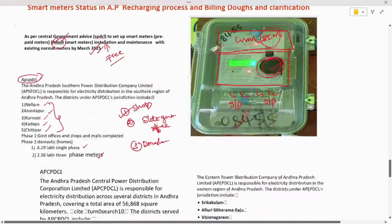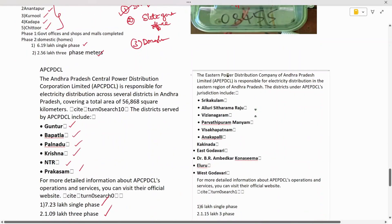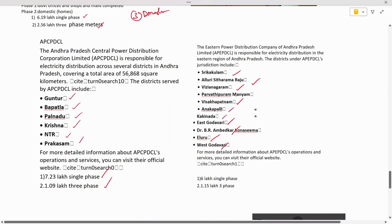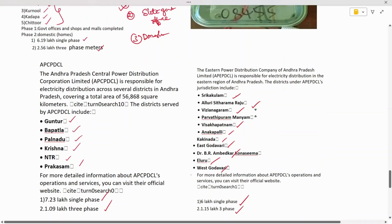Eastern Power Distribution Corporation of Andhra Pradesh includes the districts of Srikakulam, Seetharama Raju, Vizianagaram, Visakhapatnam, Manyam, Anakapalli, Kakinada, East Godavari, Vasasema, Eluru, and West Godavari. Here, 6 lakh single-phase energy meters are already installed and 1.5 lakh three-phase energy meters are also installed.